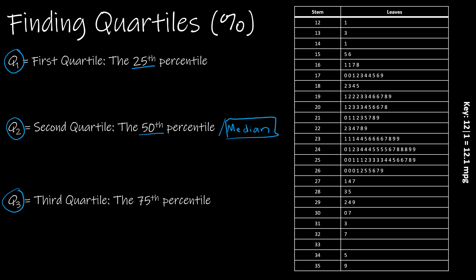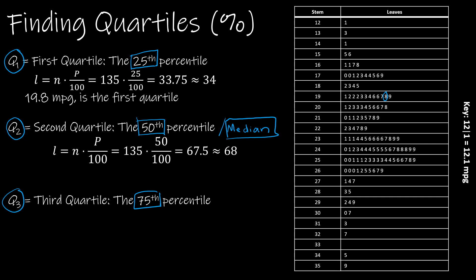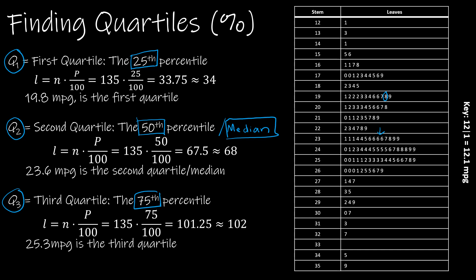So what would I have to do to find the quartiles? Again, the exact same thing I've been doing, using 25, 50, and 75. So for the first quartile, I get n, which is 135, times 25 over 100, which is about 34, which tells me 19.8. So I'm not going to count those out, but that is the first quartile. The second quartile, or 50th percentile, is the median. Again, that's 50 over 100, which gives me 68. Which value is 68? It's 23.6. And the third quartile, or 75th percentile, is 75 over 100 times 135, which gives me 102. Which value is 102? 25.3.